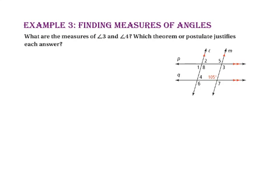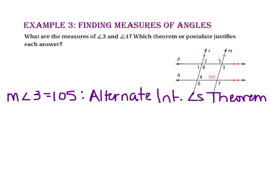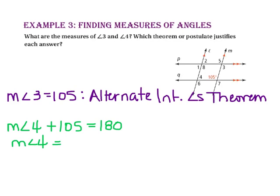In Example 3, we are going to find measures of angles. What are the measures of angle 3 and angle 4, and which theorem or postulate justifies each answer? Since line P is parallel to line Q, angle 3 and the 105-degree angle are alternate interior angles, which makes them congruent, so the measure of angle 3 equals 105. Since angle 4 and the 105-degree angle are same side interior angles and line L is parallel to line M, the measure of angle 4 plus 105 equals 180. Subtracting 105 from both sides, the measure of angle 4 equals 75, by the Same Side Interior Angles Theorem.